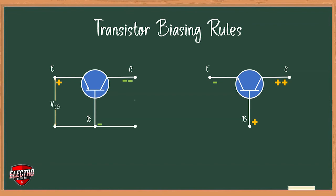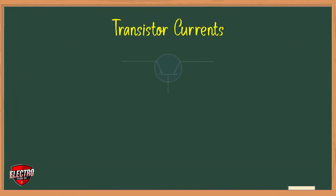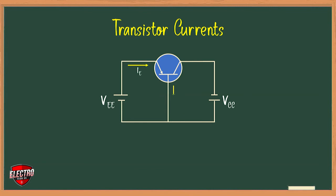Next, transistor current. Three primary currents which flow in a properly biased transistor are IE, IB, and IC, as shown in the figure. The direction of flow as well as relative magnitudes of these currents for a PNP transistor connected in common base mode: IE equals IB plus IC.